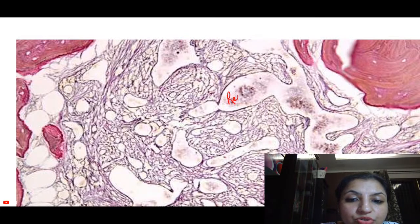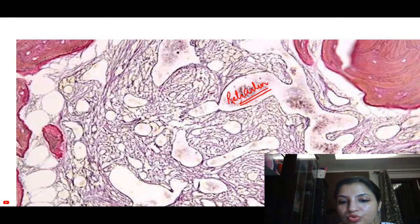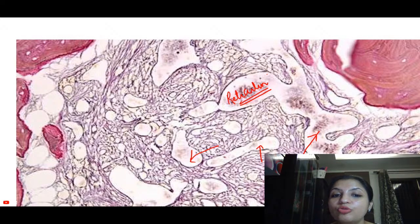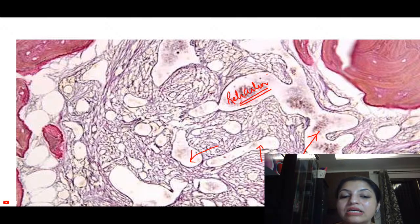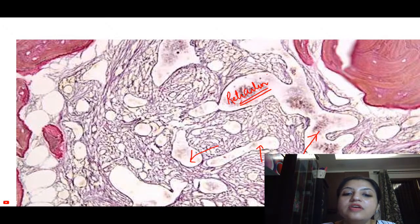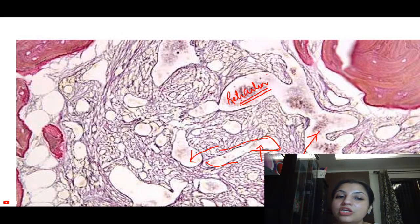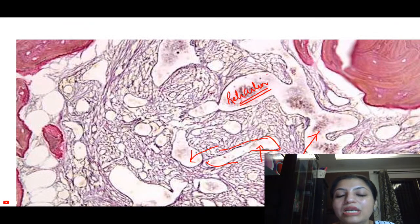To confirm that bone marrow is fibrosed, you put up a reticulin stain, and you will see that the whole bone marrow is fibrosed. Remember, the sinusoids of the bone marrow are normally collapsed, so one of the earliest findings of fibrosis is that it pulls open the sinusoids — sinusoids will appear open. Even without reticulin stain, if sinusoids appear pulled open, that is a clue to fibrosis. Then you order reticulin stain to confirm. On electron microscopy, it shows ribosomal-lamellar complexes.